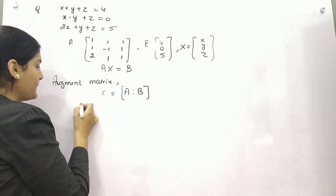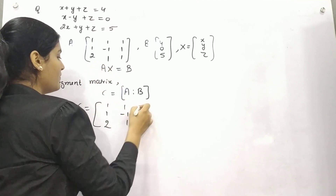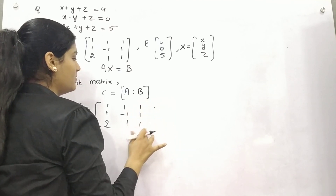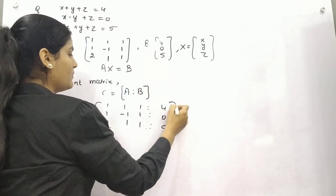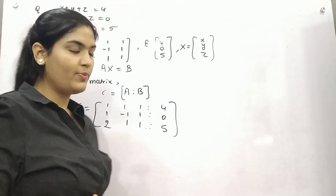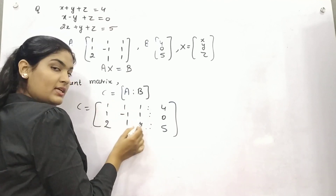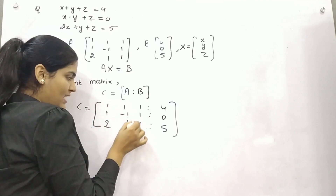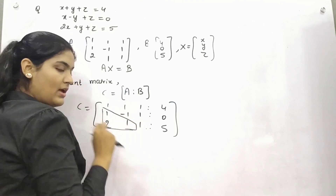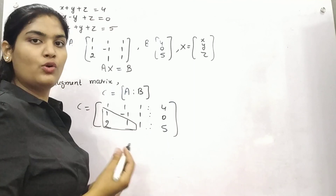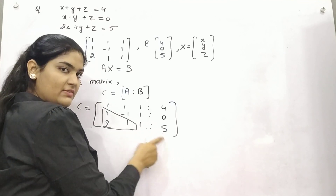You have to take your A matrix and append it with the B elements to form the augmented matrix. Now your next step is — these are your diagonal elements. You have to make all the elements under this diagonal line, that means these three elements, equal to zero using elementary row operations, considering both A as well as B.